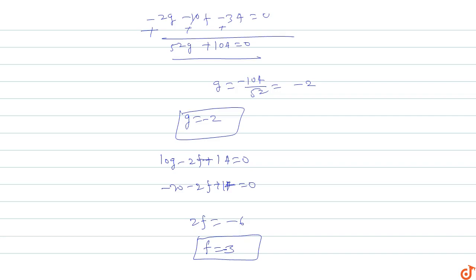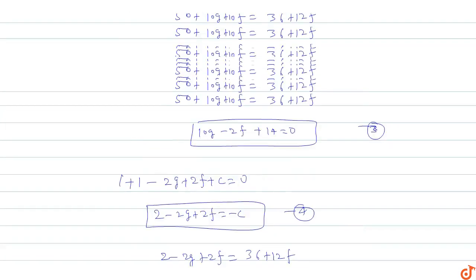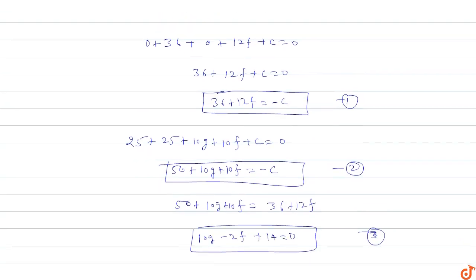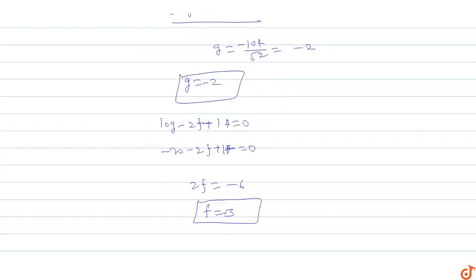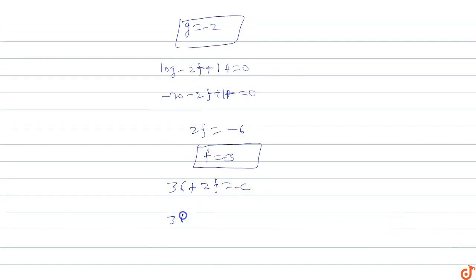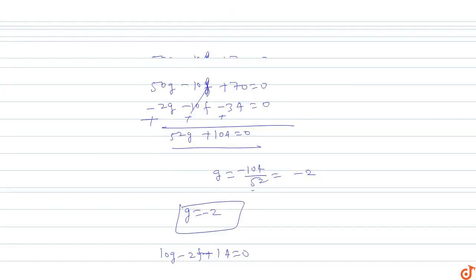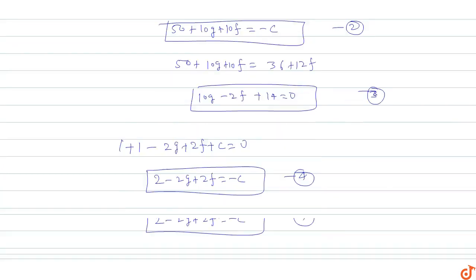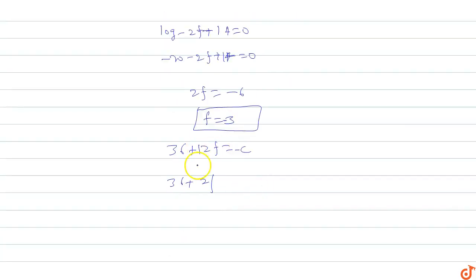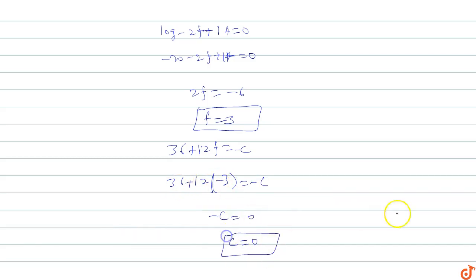Now substituting f = -3 into equation one: 36 + 12(-3) = -c, so 36 - 36 = -c, giving -c = 0, therefore c = 0. So we have g = -2, f = -3, and c = 0.